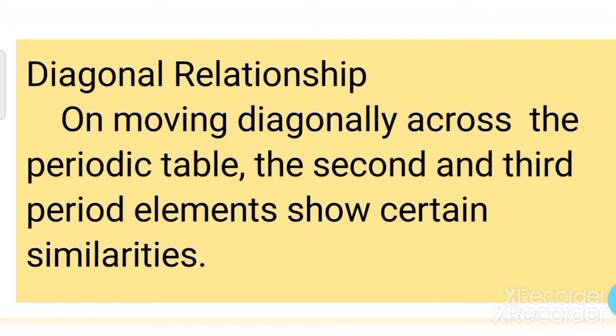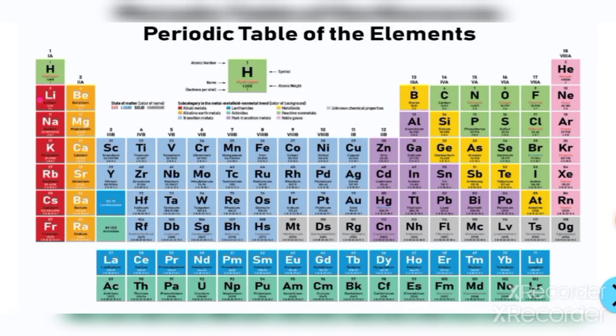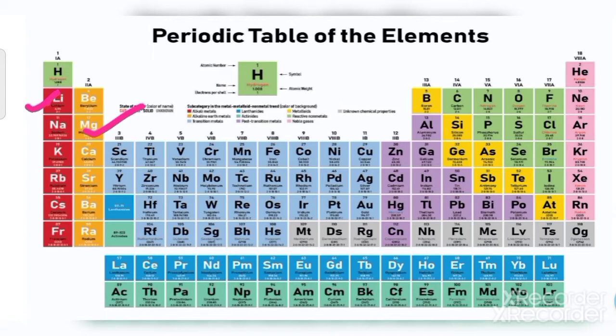For example, looking at this periodic table: lithium is a first group element, and magnesium is a second group element. Compare these two elements — properties of lithium and magnesium are similar. The reason is that lithium and magnesium are diagonal to each other.